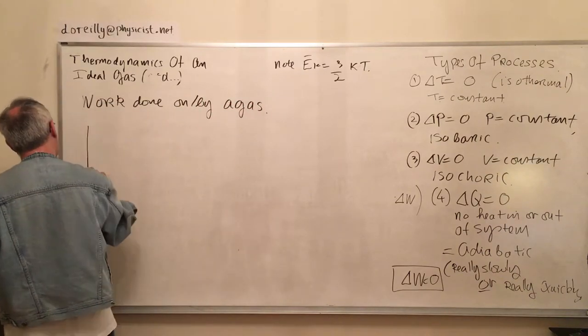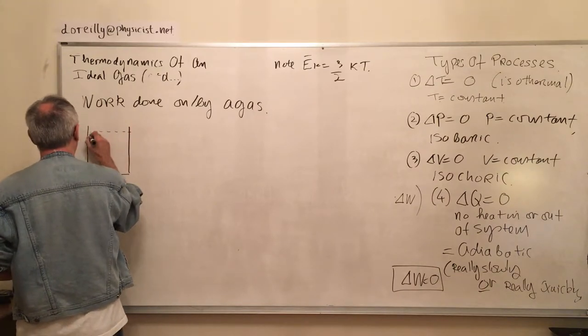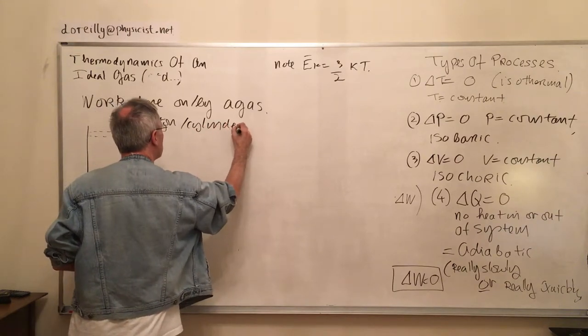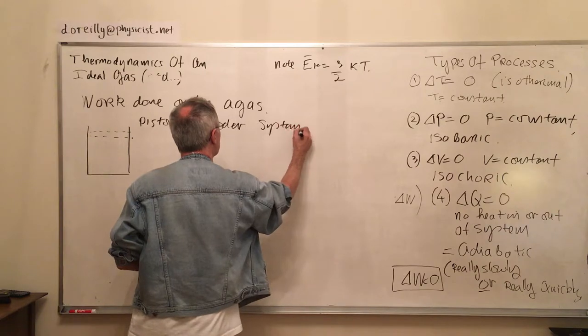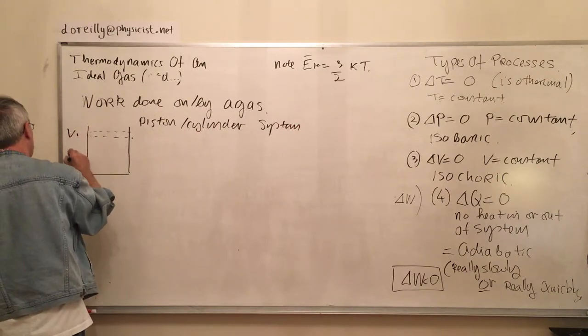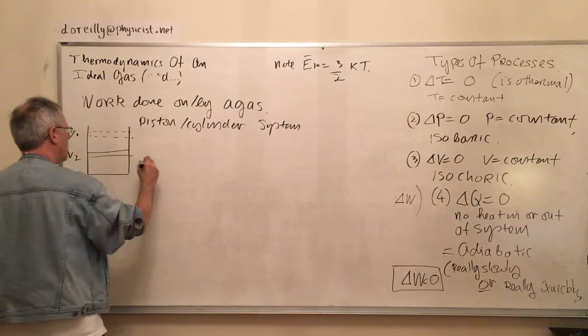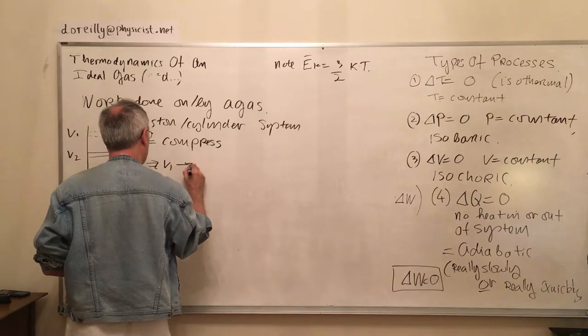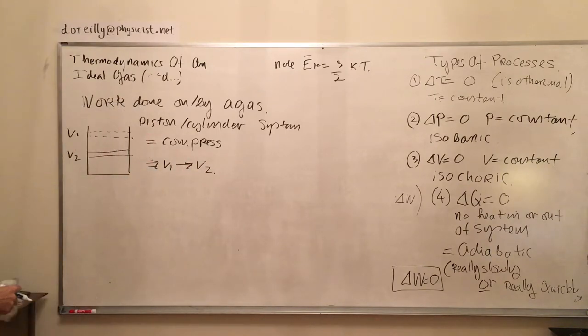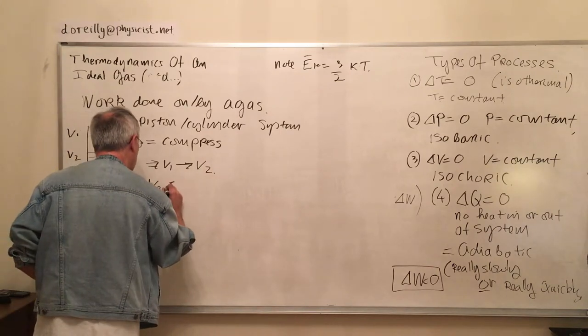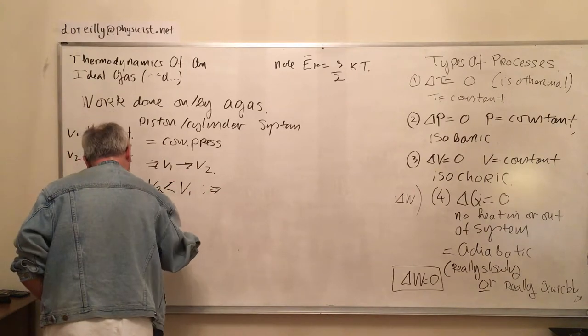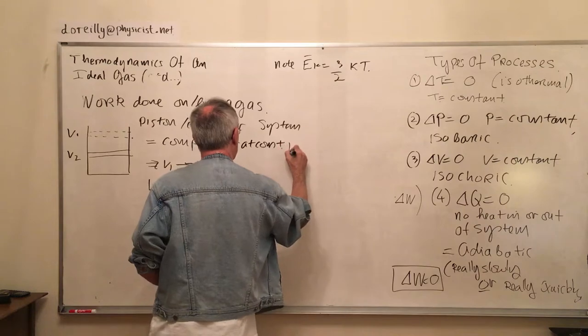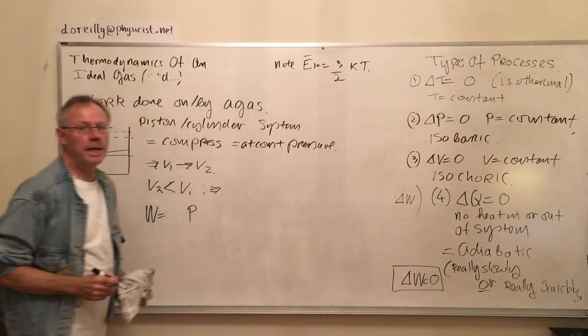We look at it this way. First of all, we put our gas in the piston and cylinder arrangement. So we have a piston-cylinder system. We'll say if we compress the gas, V1 goes to V2 such that V2 is less than V1.